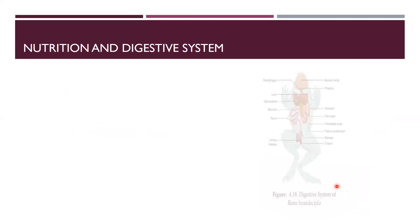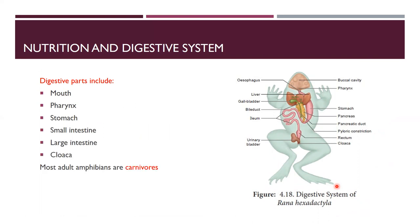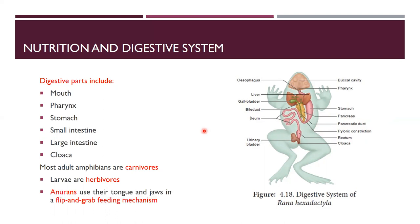Digestive parts of amphibians include the mouth, pharynx, stomach, small intestine, large intestine, rectum, and cloaca. Most adult amphibians are carnivores while larvae are herbivores. The buccal cavity leads to the pharynx, then to the stomach, small intestine, large intestine, rectum, and cloaca. Anurans (frogs) use a flip-and-grab feeding mechanism.